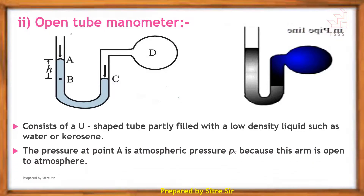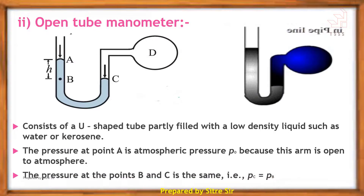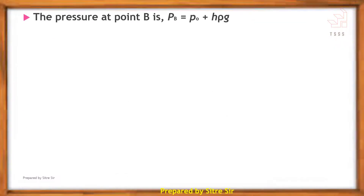The pressure at point A is atmospheric pressure P0, because it is open to the atmosphere. The pressure at points B and C is the same: Pc equals Pb. The pressure at point B is Pb equals atmospheric pressure P0 plus H·rho·g, where H is the height difference of the liquid column.